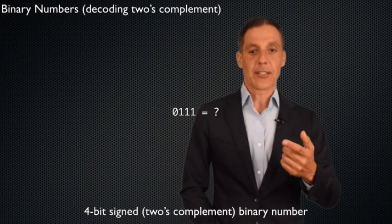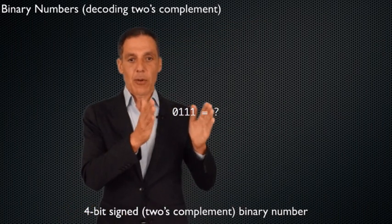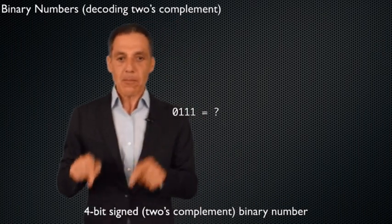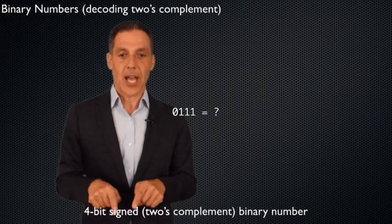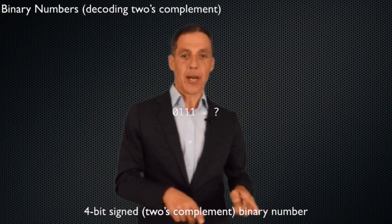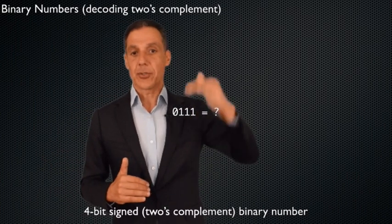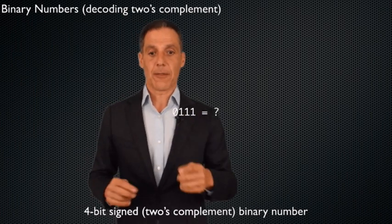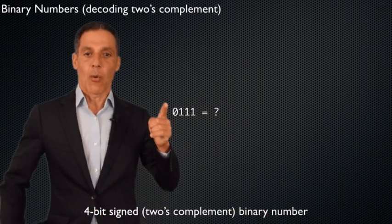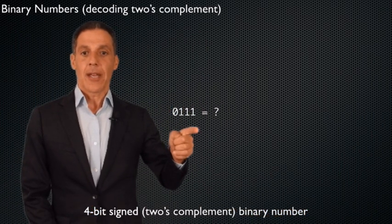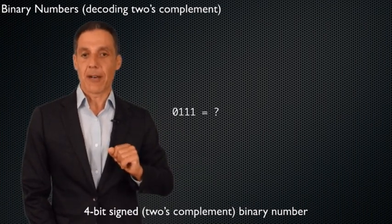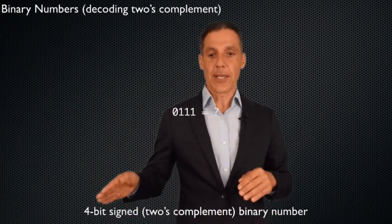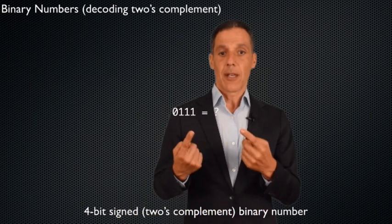Let's do a couple of exercises to make sure we're all on the same page. Remember that whenever I give you a binary number I have to tell you how it is being represented — for example, whether it's a four-bit signed two's complement binary number — because the same bits mean something different under unsigned versus signed representations. So if I just ask you what is 0111 in decimal without specifying, you have to say I haven't given you enough information.